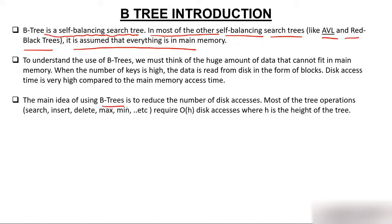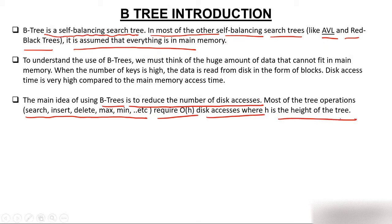The main idea behind using B-tree is to reduce the number of disk accesses, because the time to access a disk is very high. Most tree operations — search, insert, delete, min, etc. — require O(h) disk accesses, where h is the height of the tree. So if the height increases, disk accesses increase.